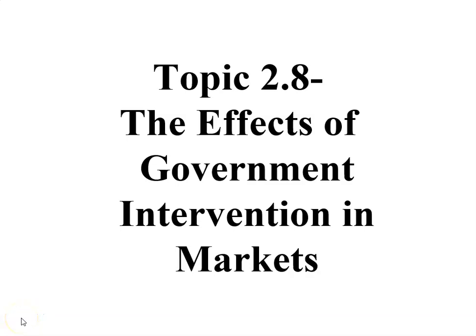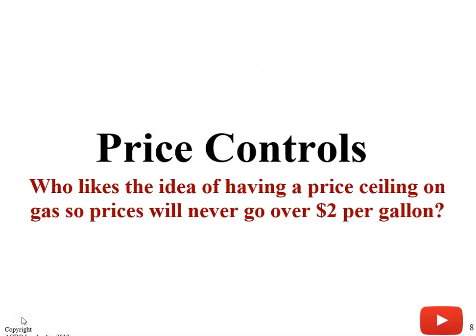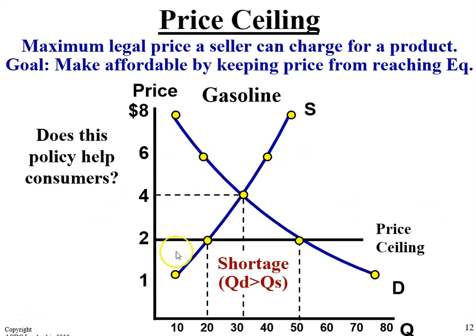In this video, I'm going to cover the effects of government intervention in markets. Think about a scenario where a price ceiling on gas would be put into place so that gas would never go over $2 per gallon. If the price ceiling is at $2 but the equilibrium price is $4, what's going to happen is there would be a shortage — the quantity demanded is greater than the quantity supplied — and that policy is not going to help consumers.